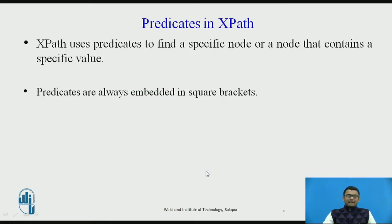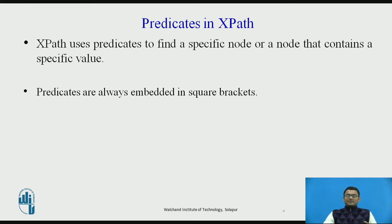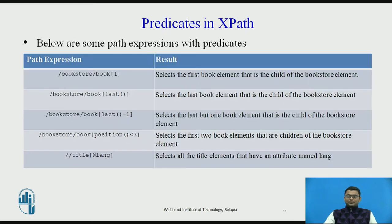So what are predicates in XPath? If we want to find a specific node or a node that contains a specific value, we use predicates. They are always embedded in square brackets. So if you want to select a particular specific node or value, you always mention the predicate in square brackets.